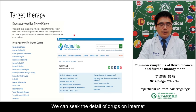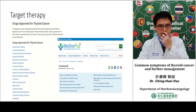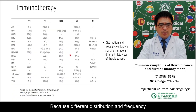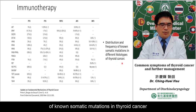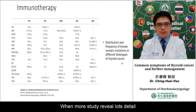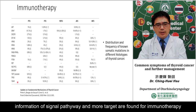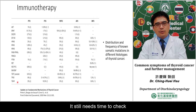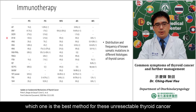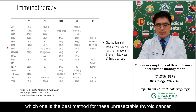You can find more information about drug information on the internet. Immunotherapy research is ongoing, looking at mutation distribution and frequency across different thyroid cancer types. As studies progress, more immunotherapy targets will be identified, but determining which drug is best for untreatable thyroid cancer still requires time and clinical trials.